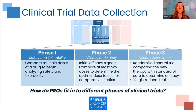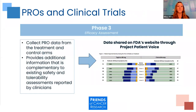So how do PROs fit into the different phases of clinical trials? For phase 3, the efficacy assessment, we can collect PRO data from the treatment and control arms, which provides additional information complementary to existing safety and tolerability assessments reported by clinicians. These data are shared on the FDA's website through Project Patient Voice.